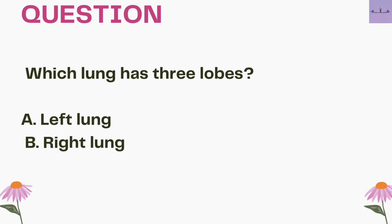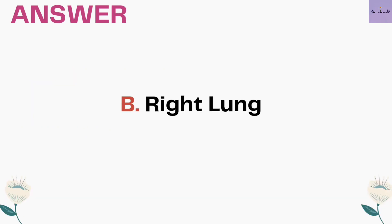Next question: which lung has three lobes? A. Left lung. B. Right lung. Our right lung has three lobes, while the left lung has two lobes — a total of five lobes. So the answer is option B, right lung.